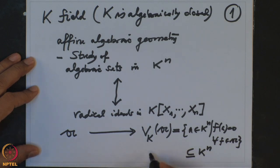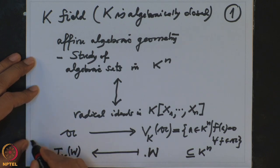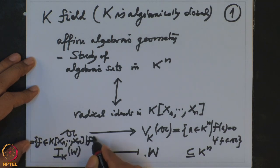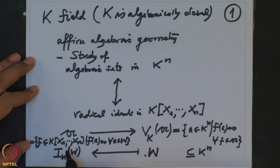The other direction: if you have an arbitrary subset W, we define the ideal I_K(W) to be all polynomials which vanish on W — precisely all polynomials F in K[X_1,...,X_N] such that F(a) = 0 for all a in W. This correspondence is bijective; the two maps are inverses of each other and are inclusion-reversing. The starting point is precisely Hilbert's Nullstellensatz (HNS).